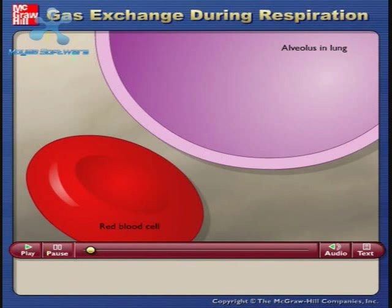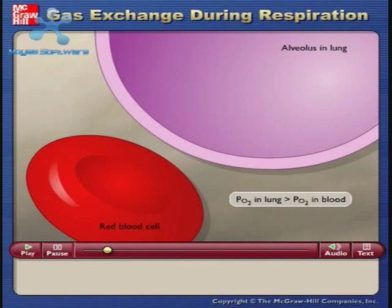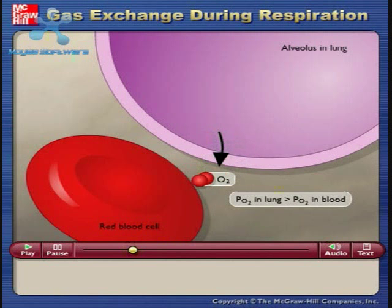Respiration serves as a means for the body to exchange gases with the atmosphere via the blood. The partial pressure of oxygen in the air in the alveolar spaces in the lungs is greater than the PO2 in the blood, so oxygen diffuses into red blood cells from air in the lungs.